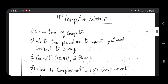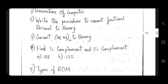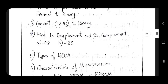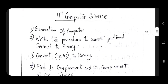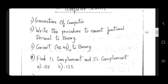Hi everyone. 11th Computer Science golden questions - 5 mark. We can make a guide. Generation of computer: write the procedure to convert fraction decimal to binary, convert 98.46 to binary, find first complement and two's complement. Either the addition or subtraction part of addition - so you know.